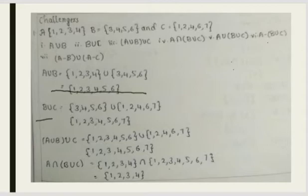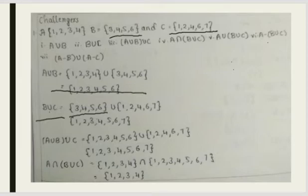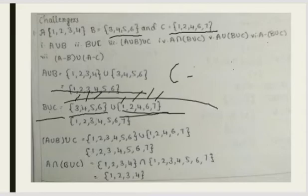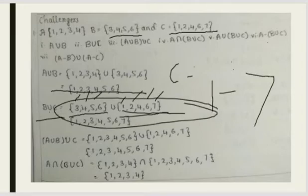Next, we will solve B union C. Whatever values B has, write them here, then put the union symbol, and write the C values — 1, 2, 4, 6, 7. Write all the information from C here, and you will get the answer: 1, 2, 3, 4, 5, 6, and 7. Numbers like 1, 2, and 7 from C should be written.